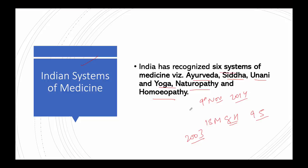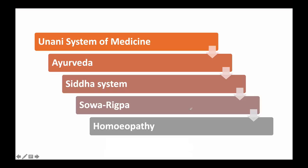Now we'll discuss each system. Firstly, the Unani system of medicine: it originated in Greece and its foundation was laid by Hippocrates. However, the system owes its present form to the Arabs, who not only saved much of the Greek literature by rendering it into Arabic but also enriched the medicine of their day with their own contributions.